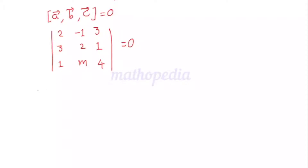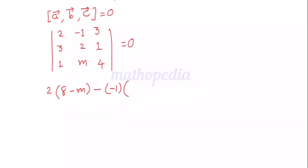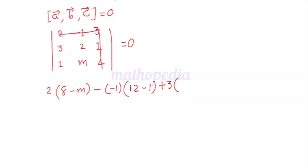Expand along the first row. First element: 2 into (leaving out first row and first column) — 2×4 = 8, minus m. Second element: minus(−1) into (leaving out first row and second column) — 3×4 = 12, minus 1. Third element: 3 into (leaving out first row and third column) — 3m minus 2.